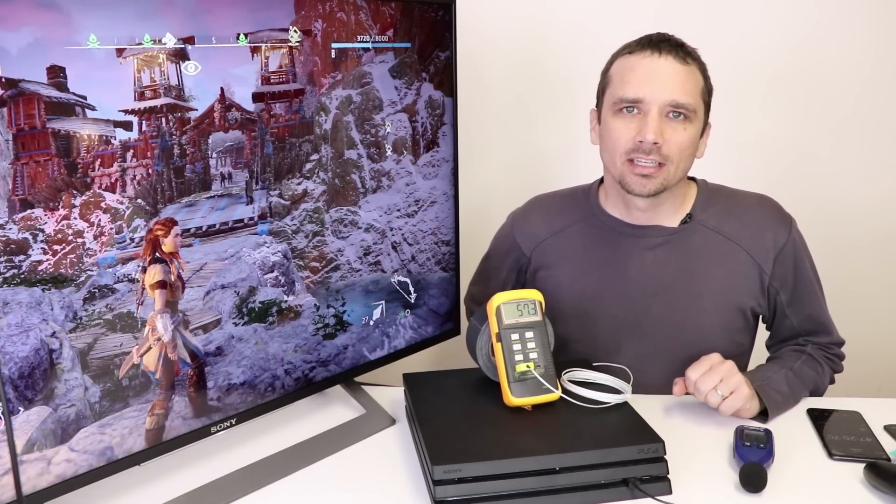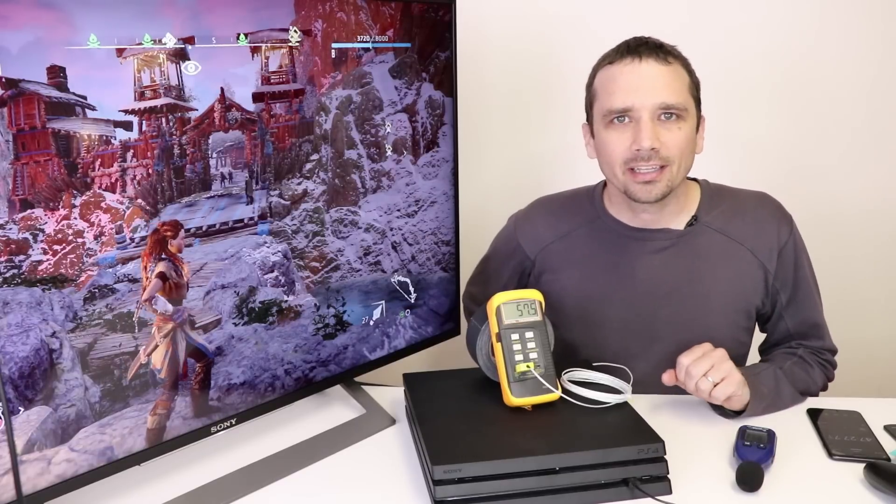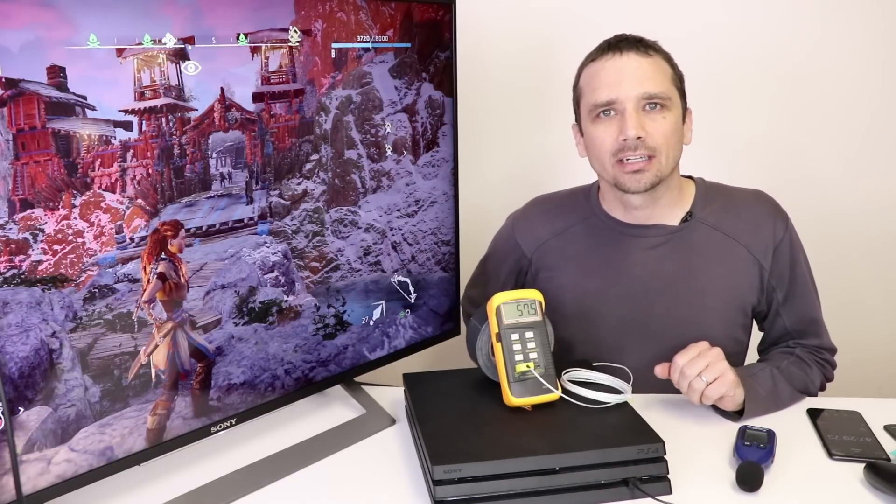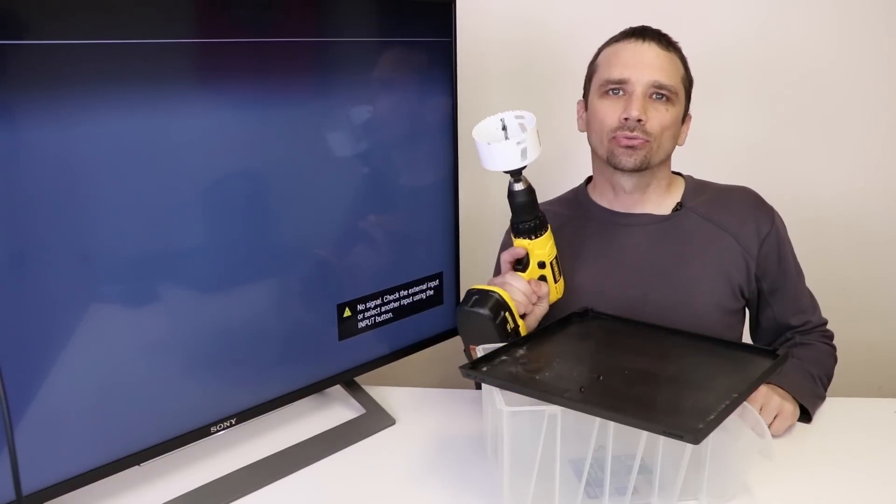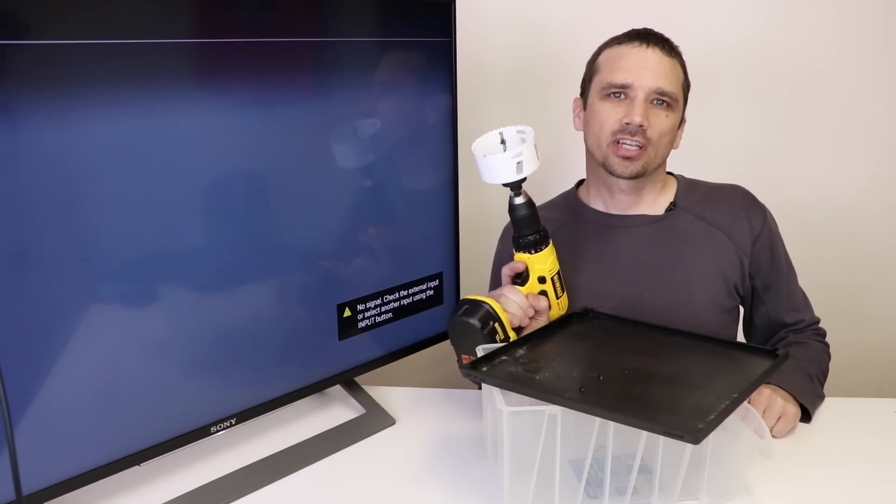Now that we've done this, let's go ahead and get the hole cut in the case, and then we'll do it all again and retest. Now we've got our extra top case, we've got our drill with our hole saw, and now it's time to get the hole drilled.